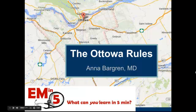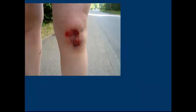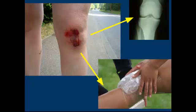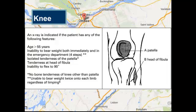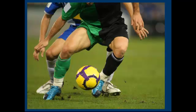Today's EM in 5 is going to be on the Ottawa Rules. When a patient comes to the ER because they've hurt their knee, ankle, or foot, we have some decisions to make. How do we decide which patient we're going to x-ray and which patient we're going to give an ACE wrap and send home with instructions to rest, elevate, and ice? Lucky for us, there's been some research in this area and some people in Ottawa have come up with rules about who to x-ray for knee, ankle, or foot injuries. The assessment can be done just during the normal history and physical — there's nothing special about it.